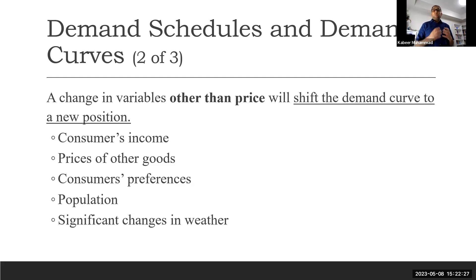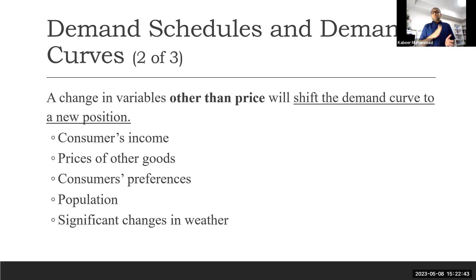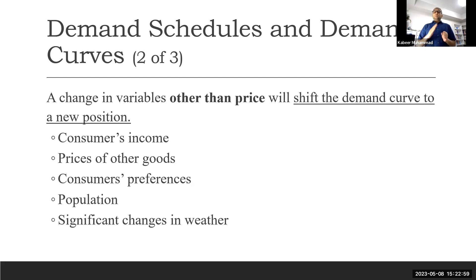Those other factors are called determinants — variables other than price. Since a graph is two-dimensional with price on one axis and quantity demanded on the other, if any other variable changes, we represent that by shifting the entire curve — either to the right or to the left.